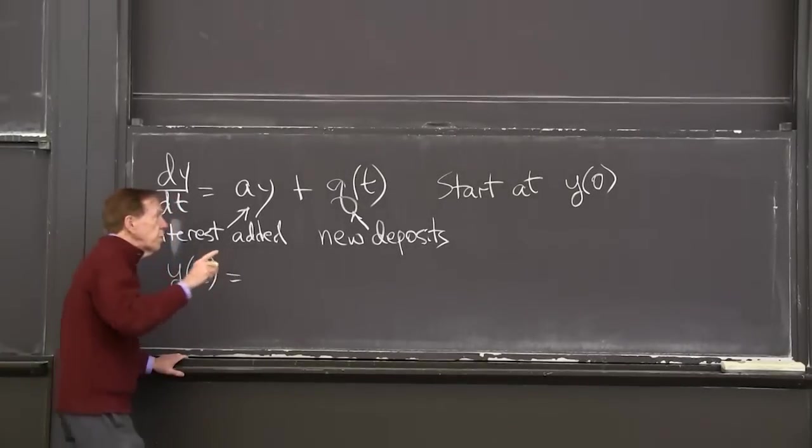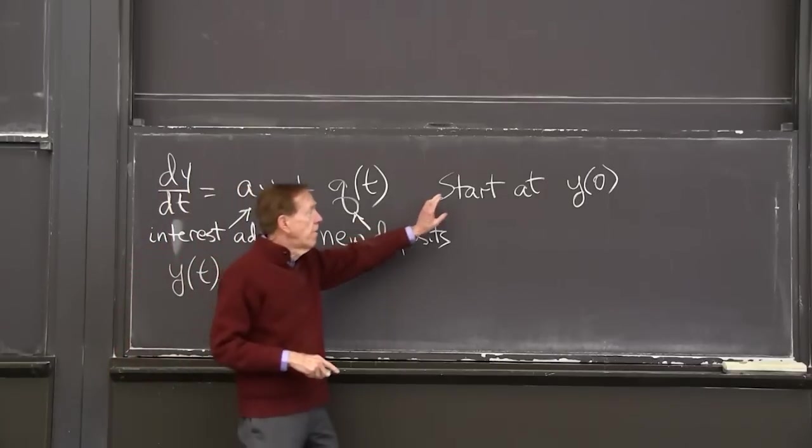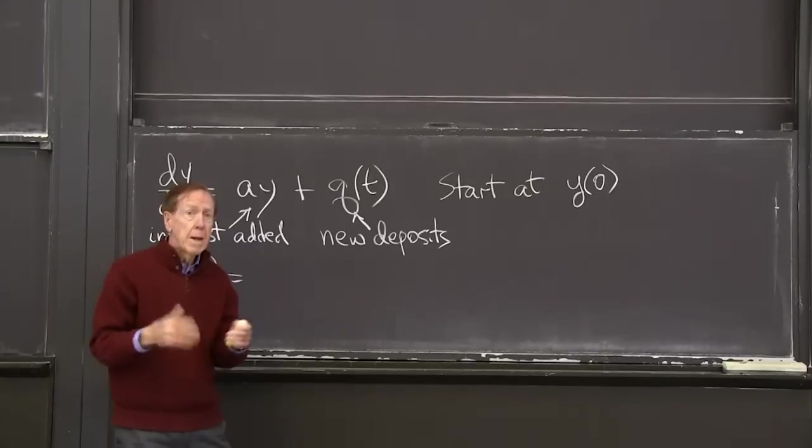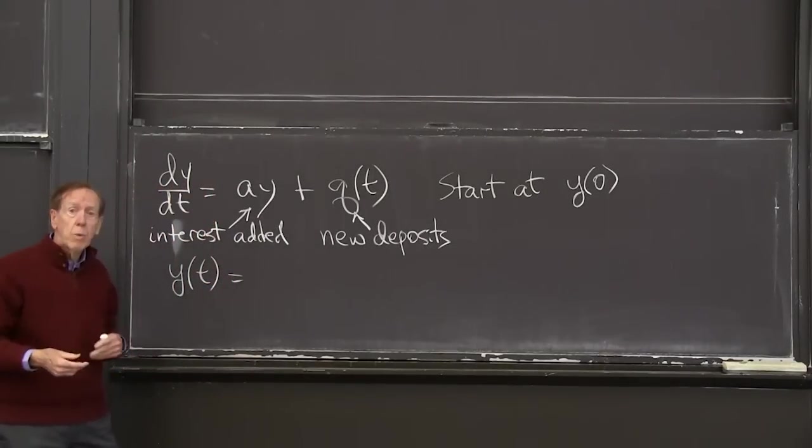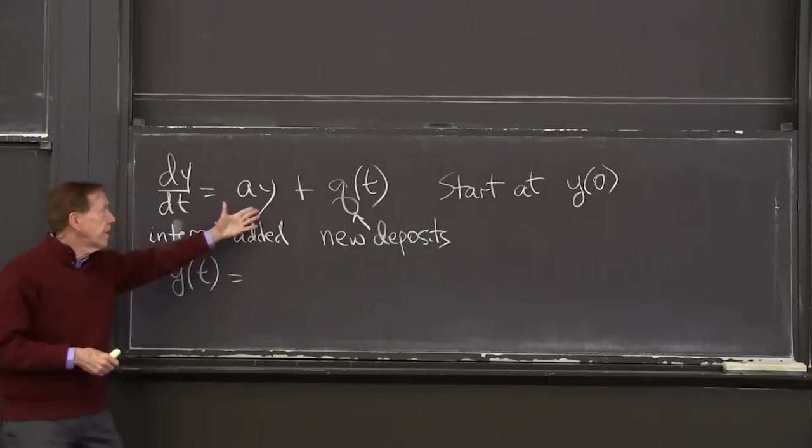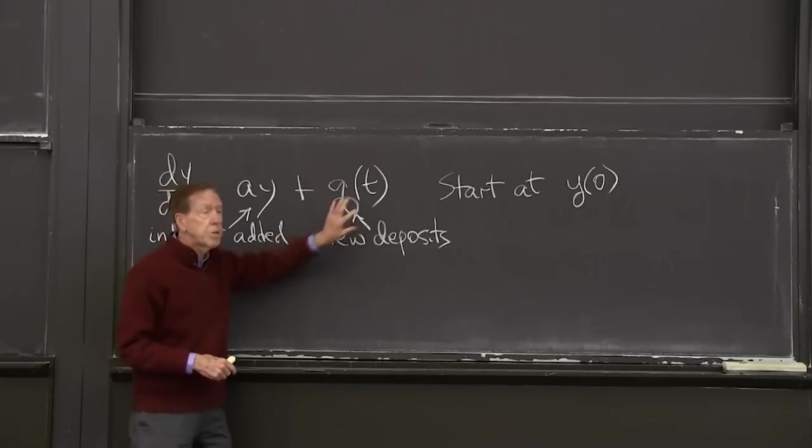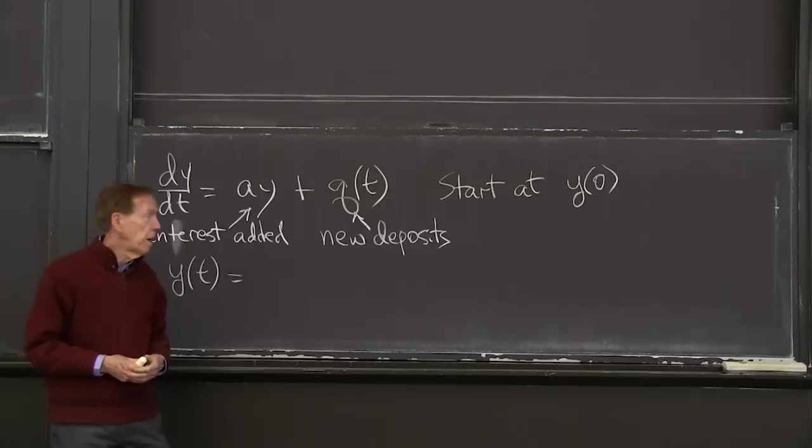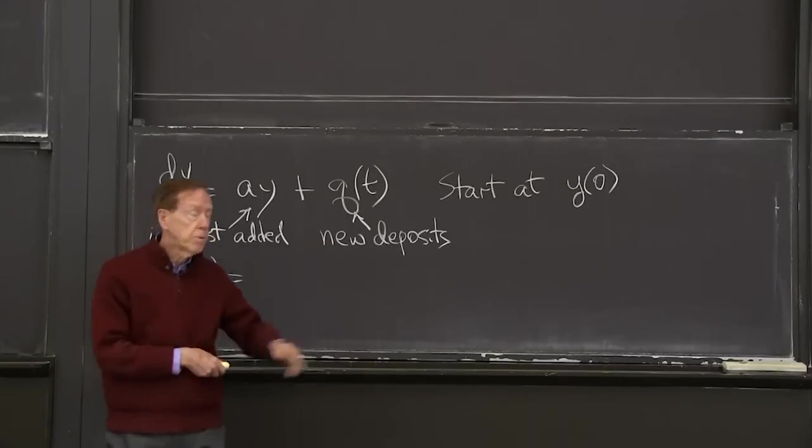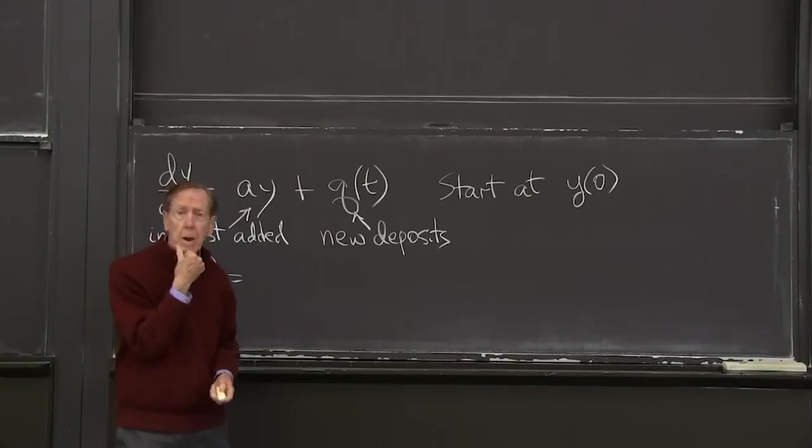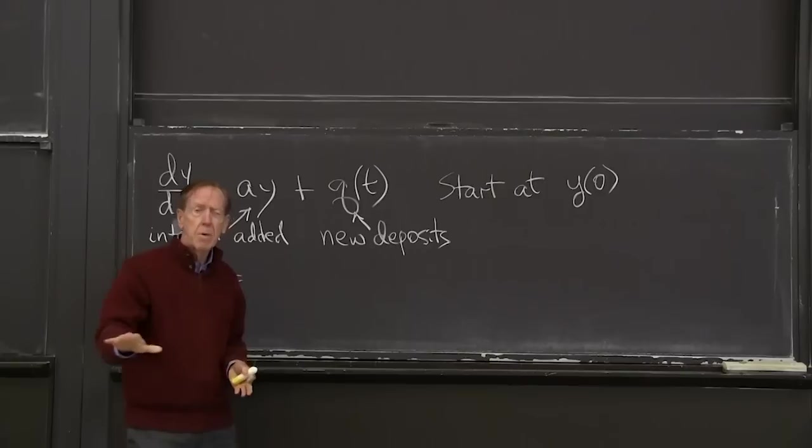So y of t. First, we have the result of the amount, the balance. I'm thinking of this as balance. The money in the bank is y. It's increasing at this rate because of interest being added. And it's increasing at this rate because of new deposits being added. And oh, maybe I should say about those deposits. I'm not thinking of like deposit once a year or once a month or once a minute even. Time is running all the